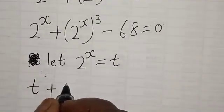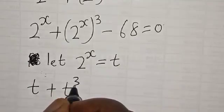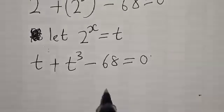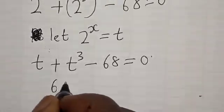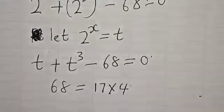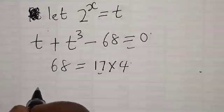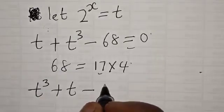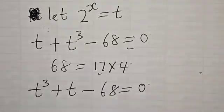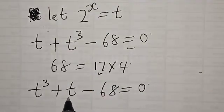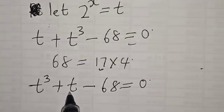We now have t raised to power 3 plus t minus 68 is equal to zero. Now remember 68 is the same thing as 17 times 4. We write this equation: t raised to power 3 plus t minus 68 is equal to zero, and we know that 68 is equal to 17 times 4, where 17 is the larger value.